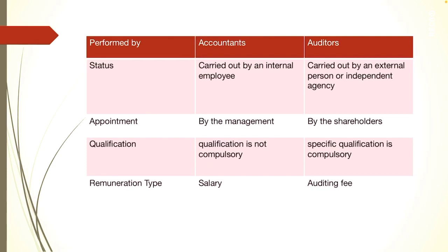Next is qualification. To become an accountant, a person needs to have completed graduation in the commerce field, whereas a specific qualification is compulsory for an auditor — he should be a graduate from the Institute of Chartered Accountants. Next is remuneration type. An accountant is a company employee who gets a salary, whereas a specific auditing fee is paid to the auditor.